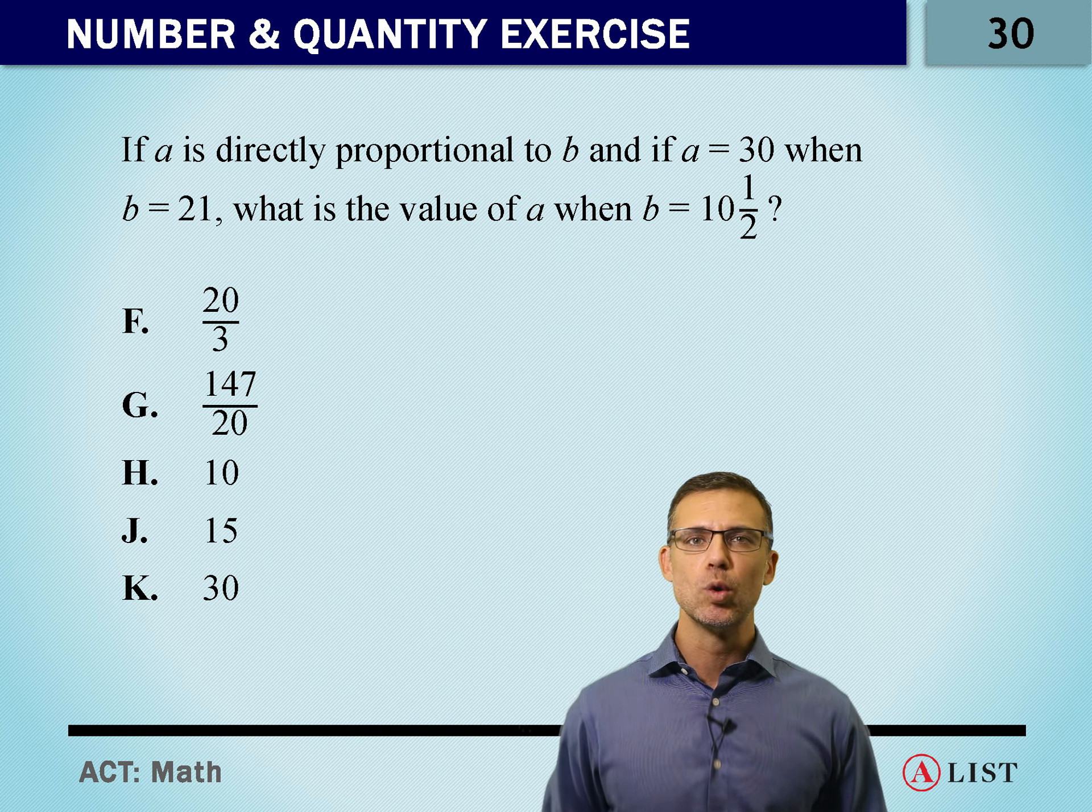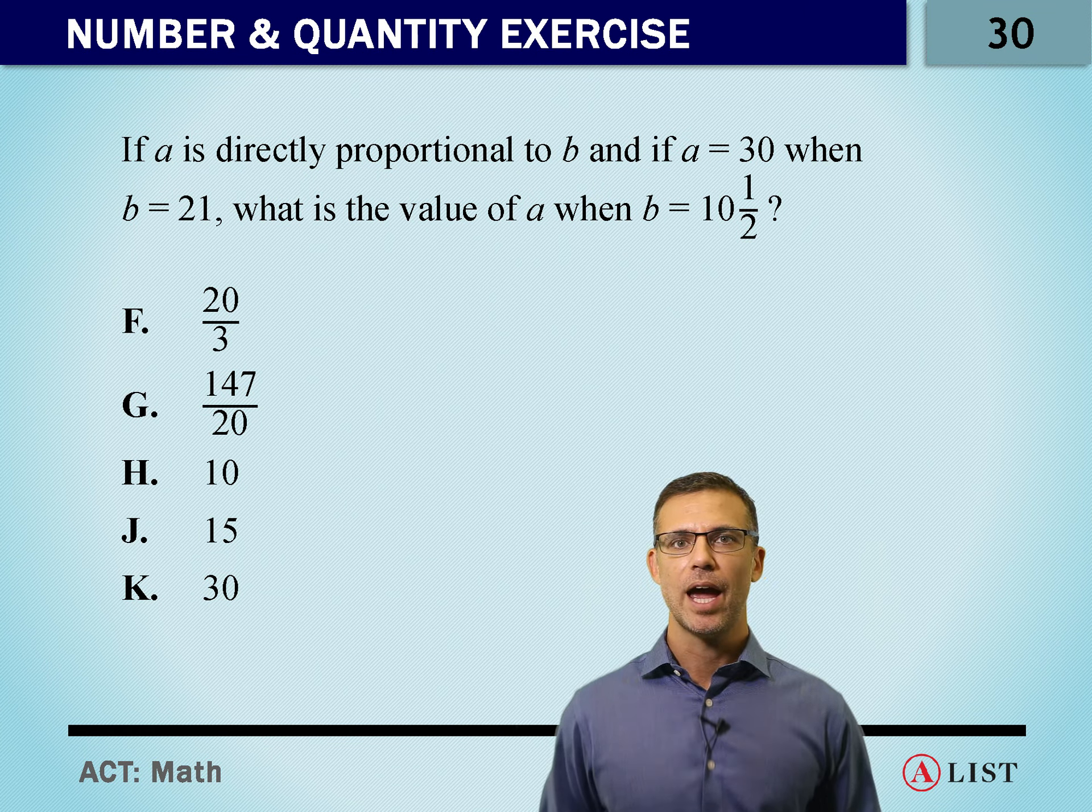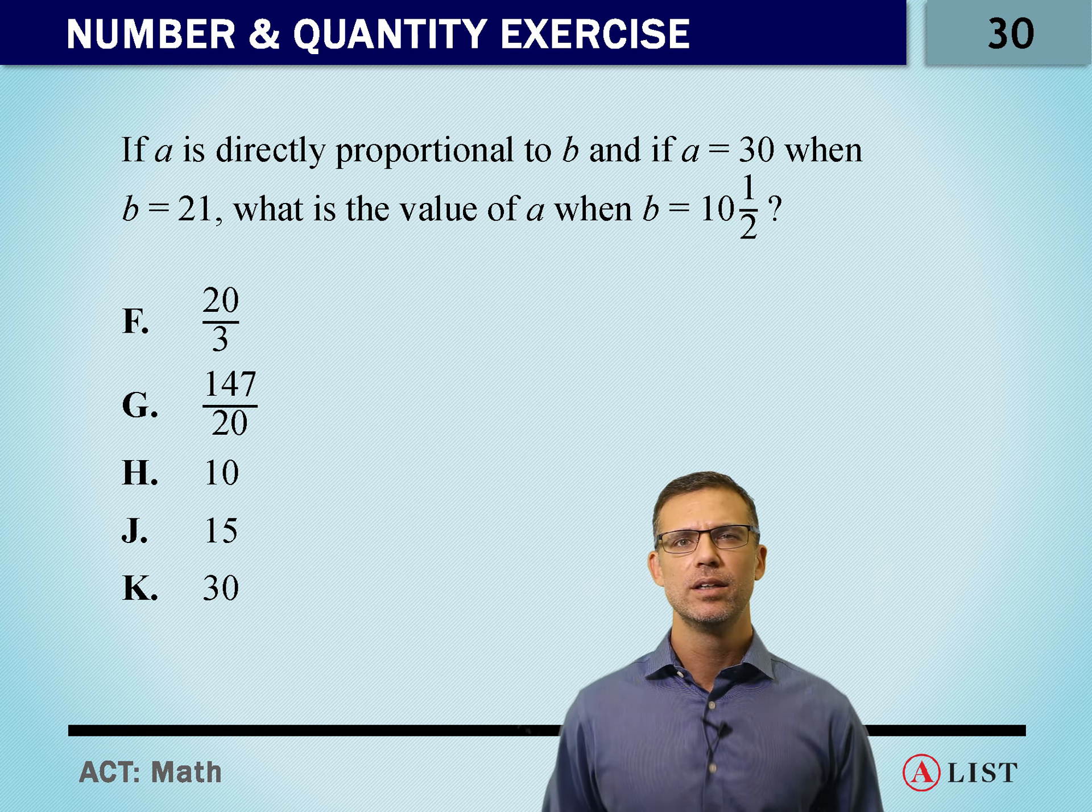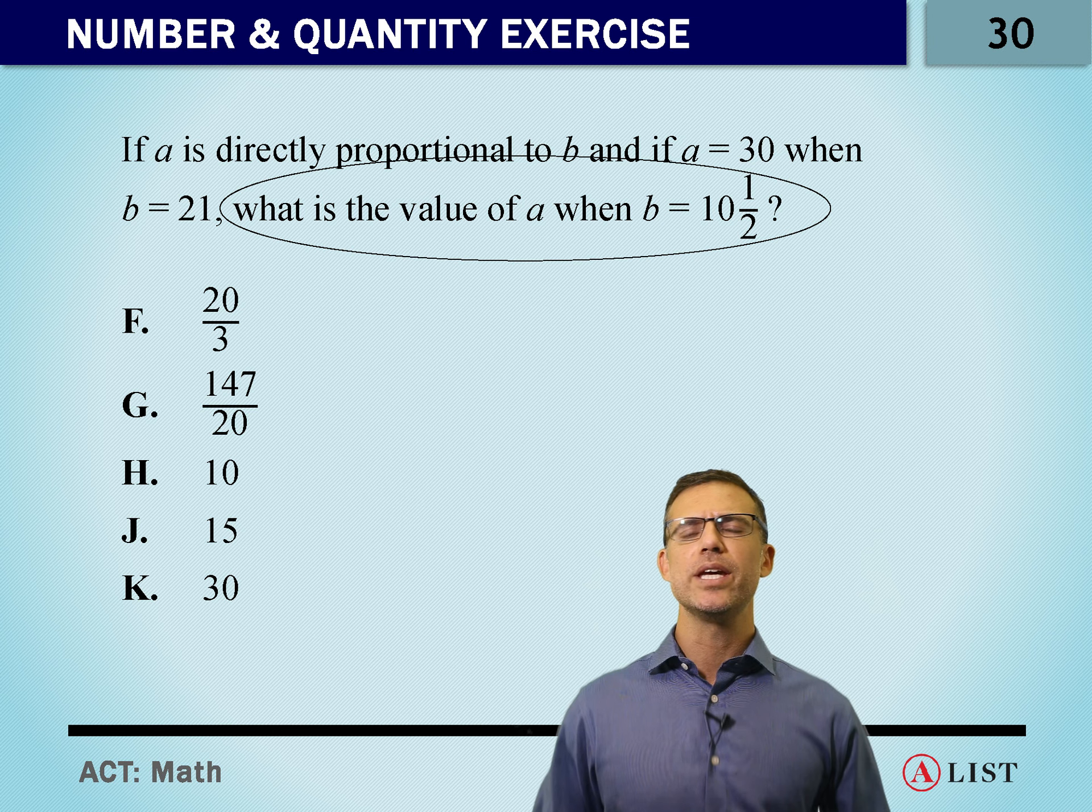Number 30. If A is directly proportional to B, and if A equals 30 when B equals 21, what's the value of A when B equals 10 and a half?